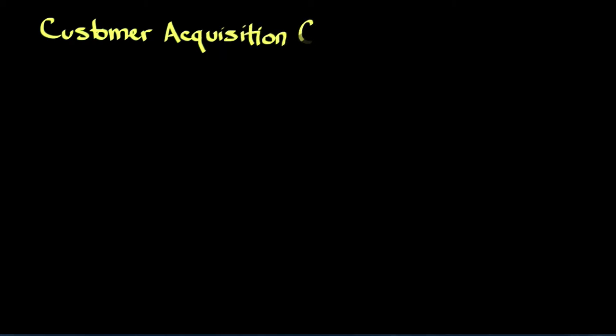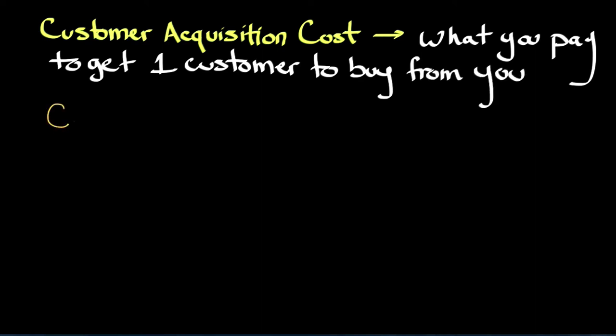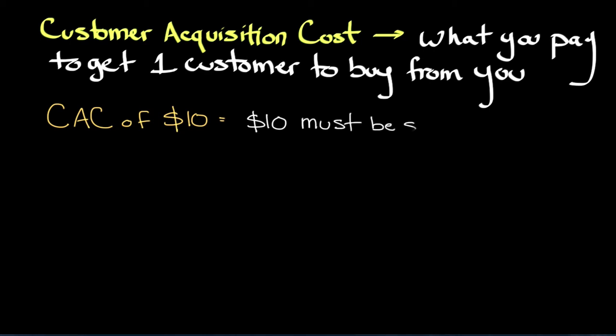In this quick lecture, we're going to talk about customer acquisition costs, also known as CAC. Your CAC is one of the most important metrics you can track for your business. CAC is what you pay to get one customer to buy from you. So if I were to say that your CAC is $10, that means it costs you $10 to get one customer to buy your product.